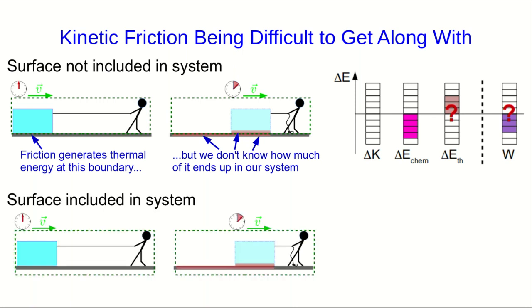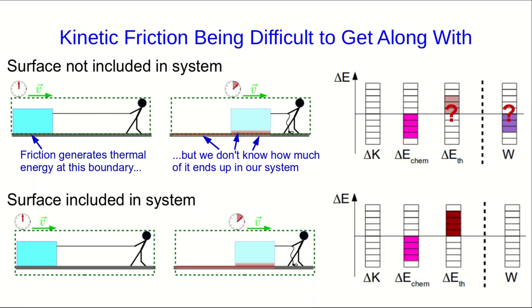What if we include the surface in the system? That makes things much simpler. Now we know that all of that thermal energy is in the system, and so what we have going on is just that chemical energy is converted to thermal energy. We still don't know how to calculate that thermal energy change, but we will in a future lecture.